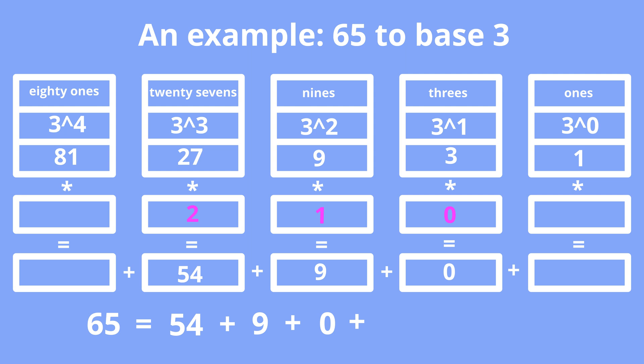Next, let's put digit 2 in the 1s position. 54 plus 9 plus 0 plus 2 equals 65. We obtain the required result.